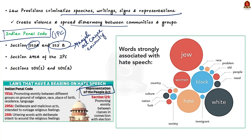Then comes Section 295A of the IPC. This section deals with punishing acts which deliberately or with malicious intention outrage the religious feelings of a class of persons. The third section to remember is Sections 505(1) and 505(2).